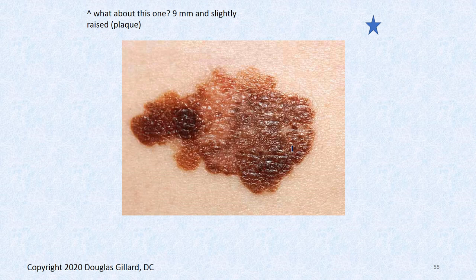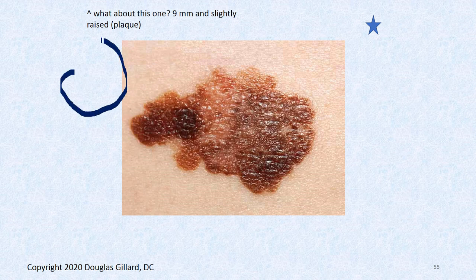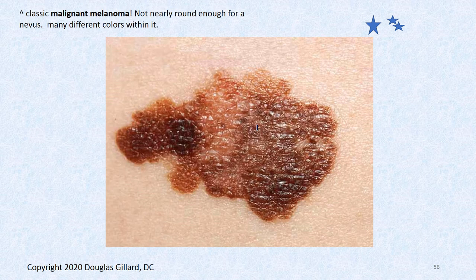Here's one that does not look good — nine millimeters, slightly raised, and it is evil-looking. There are many colors: dark brown, light brown, different shades, irregular borders, bigger than a pencil eraser. That is malignant melanoma. Hopefully you caught that — seborrheic keratosis can occasionally look similar, so you'd have to refer it out, but that one should jump right at you. That will kill somebody, so don't miss it.